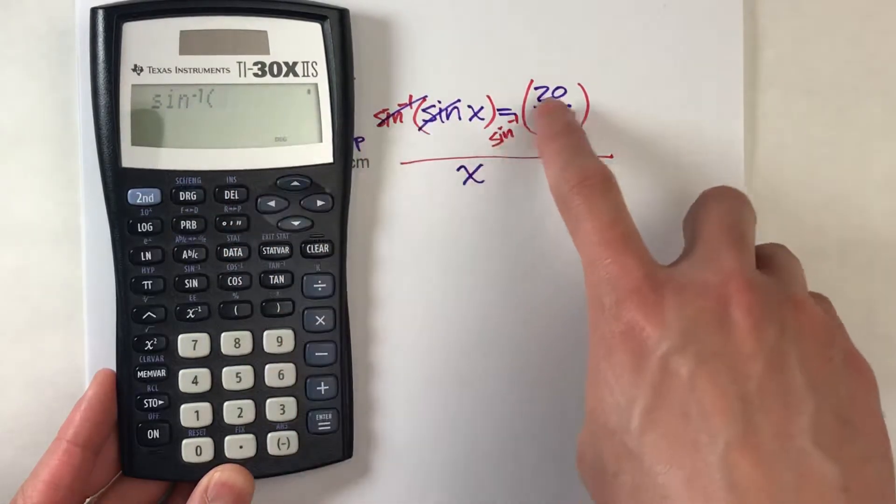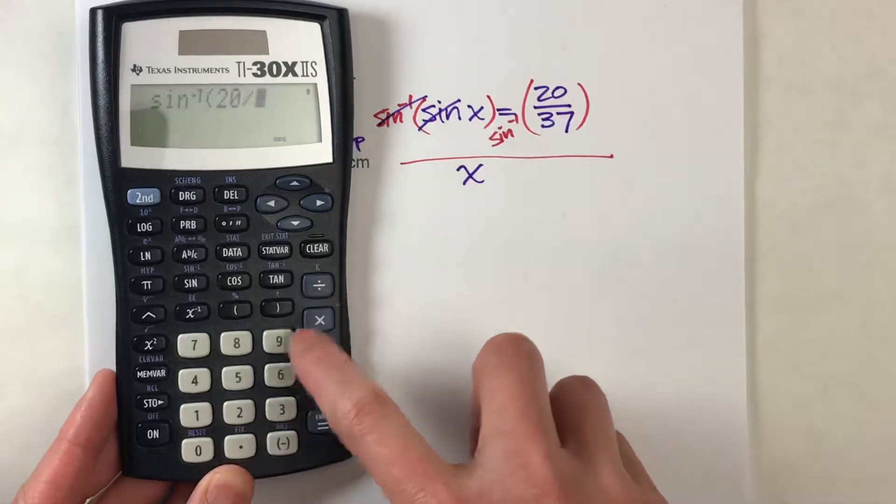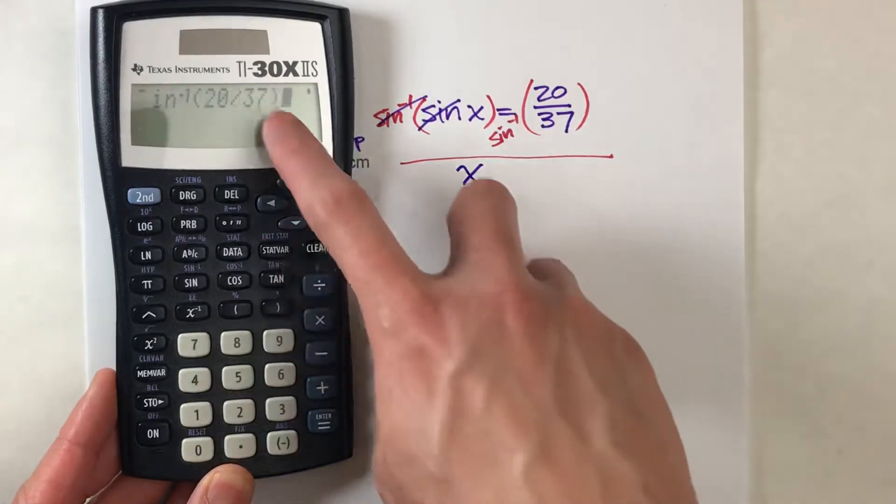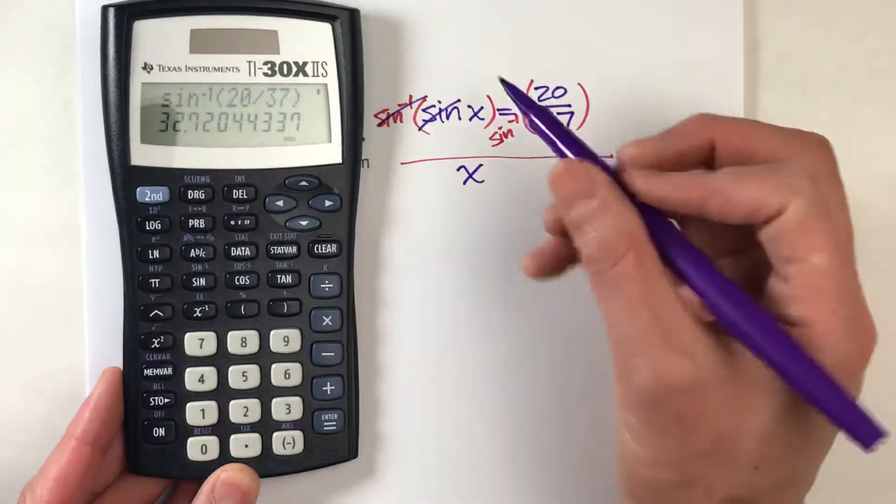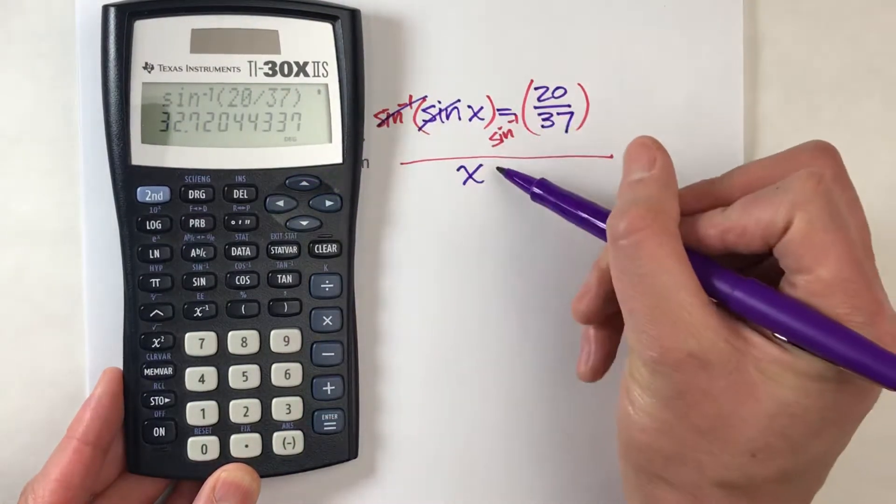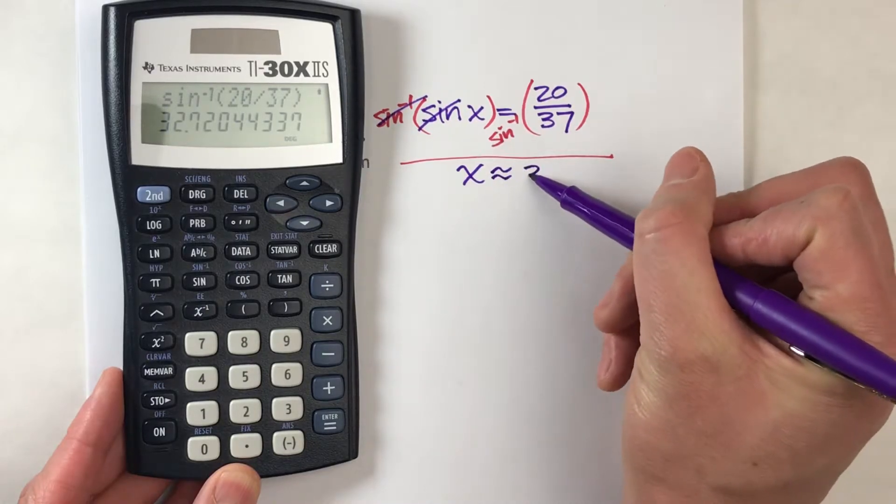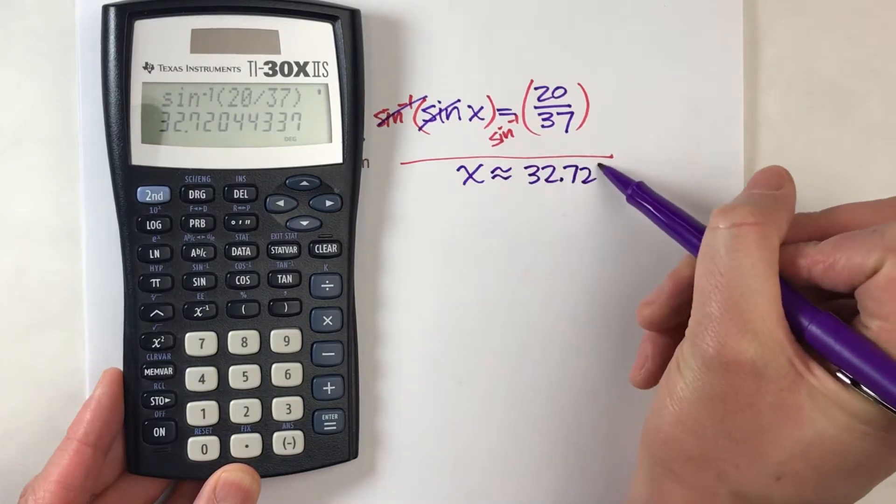So I'm going to take the inverse sine of 20 divided by 37, and my calculator can take that whole thing in just like that. When I hit enter, now I know what that angle is. It's about 32.72 degrees.